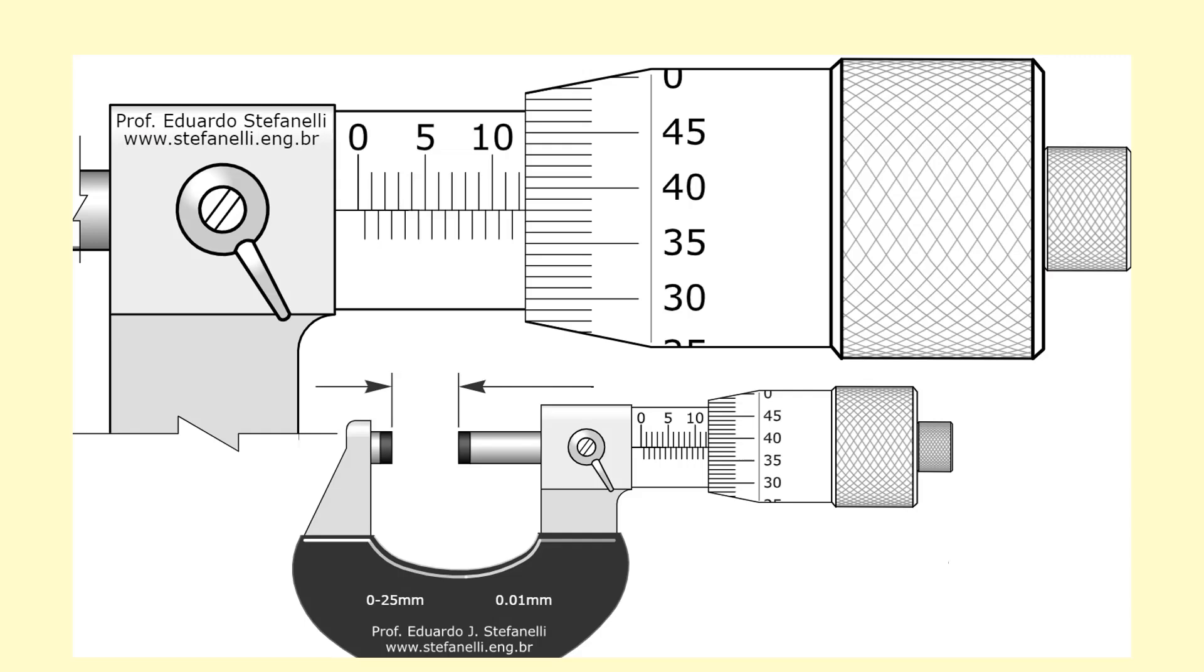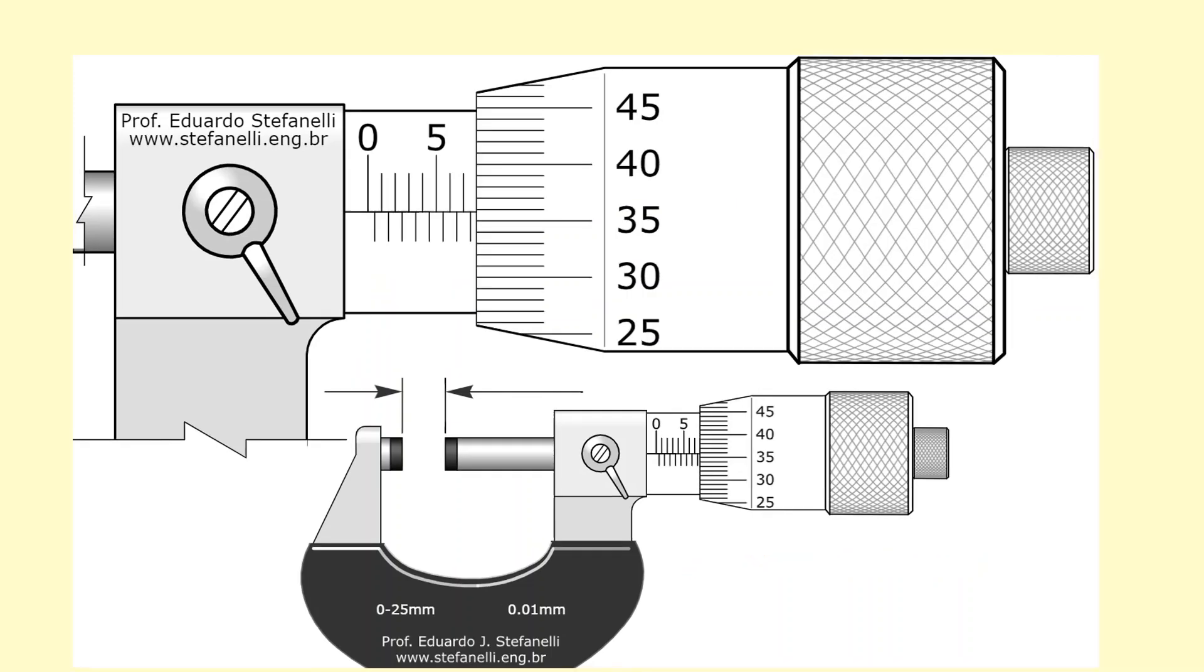To take a reading from the micrometer, you start with the main scale. You can see the sleeve is aligned somewhere along here - that's 11, that's 12 - so it's 12 point something. Write that down: 12 point something. To figure out what that something is, check where the thimble scale lines up. It's along there somewhere, and that's 0.38. Add that up: 12.0 plus 0.38 gives you 12.38 millimeters.